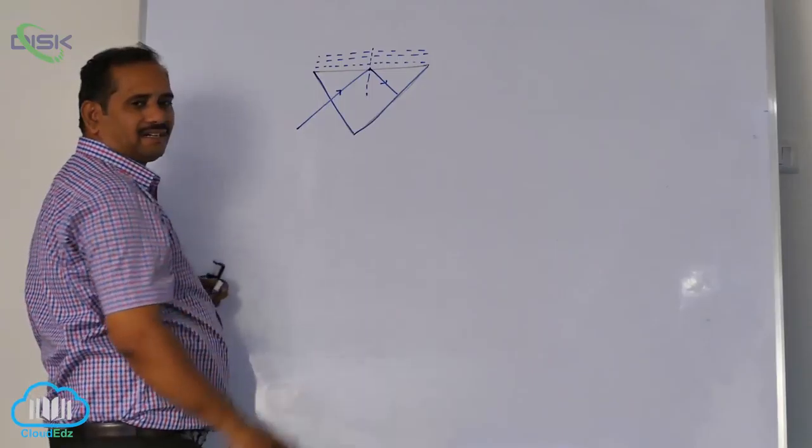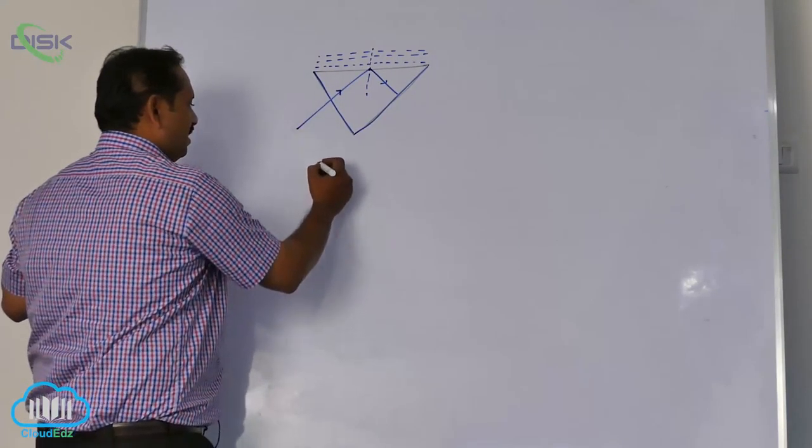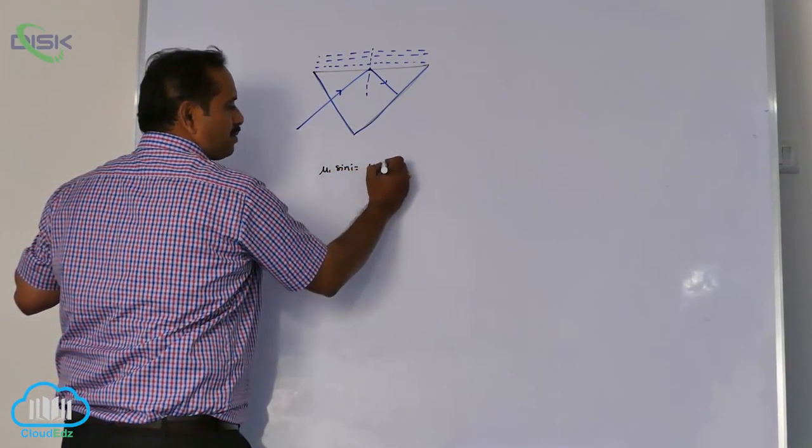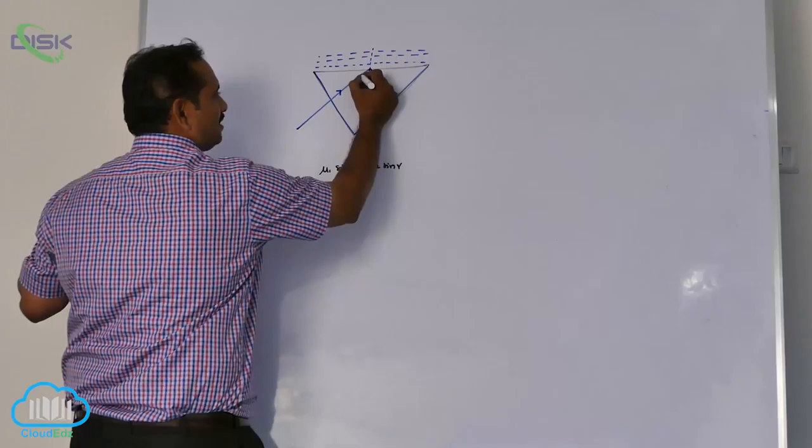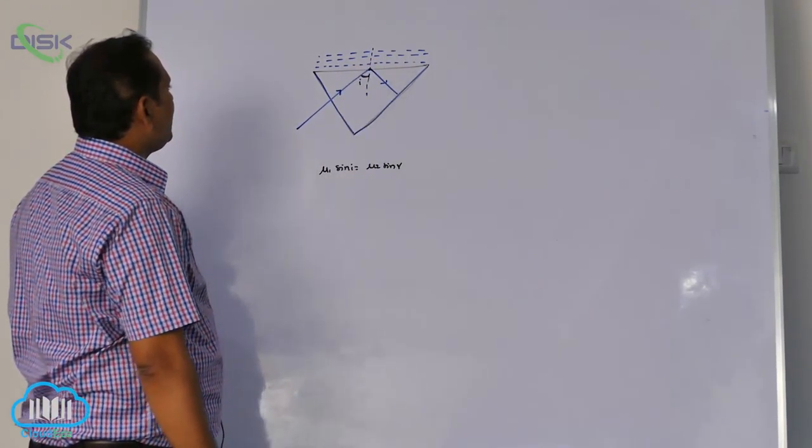Here you can understand I want to apply Snell's law between glass and water. Snell's law is applied between glass and water. Mu 1 sin I equal to mu 2 sin R. This angle I want to calculate I. Angle between the normal and incidence I want to calculate I.